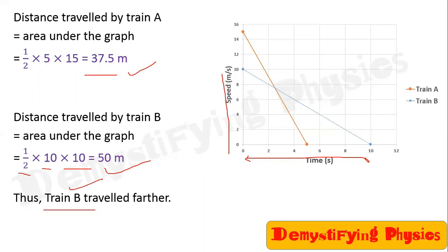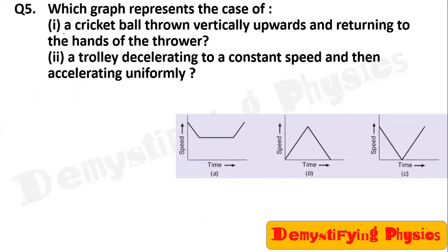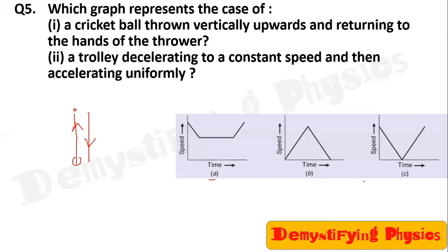Question five: which graph represents a cricket ball thrown vertically upwards and returning to the thrower's hands? When you throw the ball upwards, its speed decreases because gravity pulls it down — this is uniform retardation. When it reaches the highest point, speed becomes zero. Then it comes back down with uniform acceleration as Earth attracts it. So the graph shows uniform retardation going up, speed reaching zero, then uniform acceleration coming down.